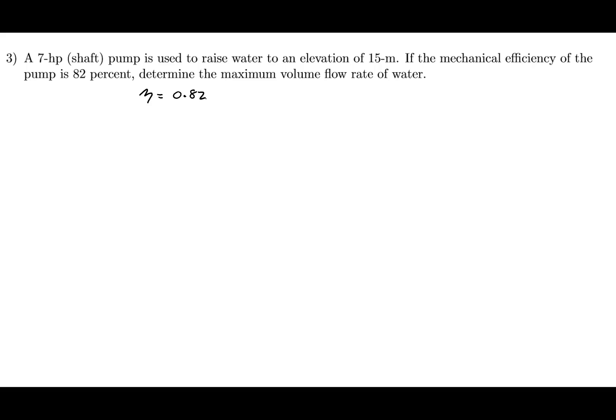In this problem, we have a 7 horsepower shaft pump that we're using to raise water to an elevation of 15 meters. If the mechanical efficiency of the pump is 82%, we need to determine the maximum volumetric flow rate of the water. So the efficiency is 0.82, and we're looking for the volumetric flow rate.